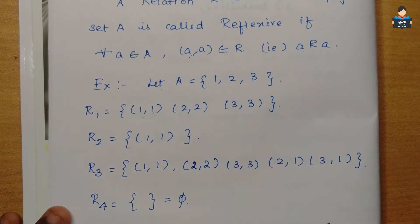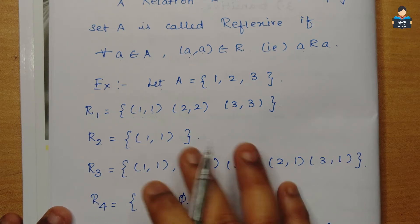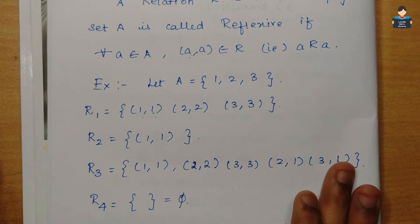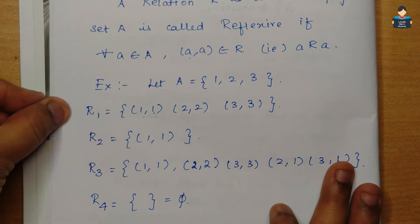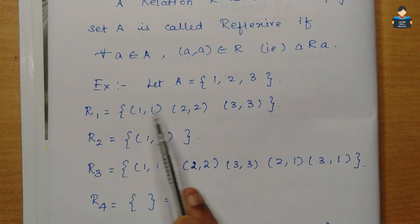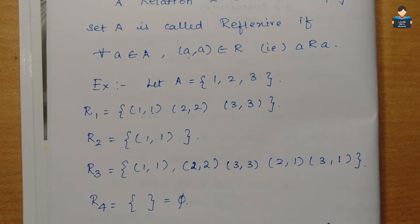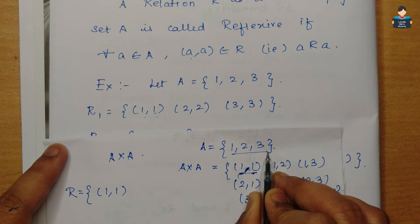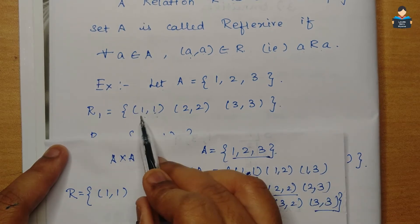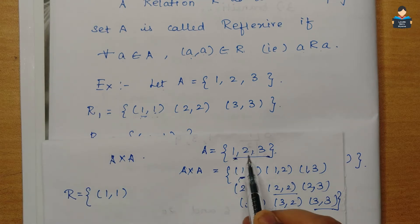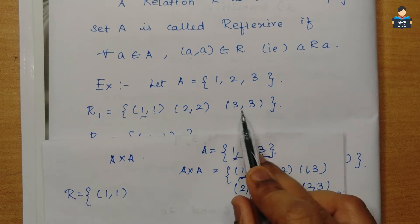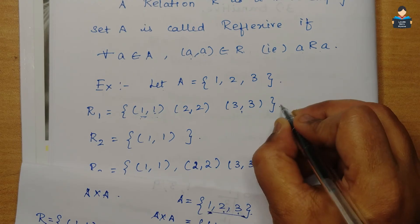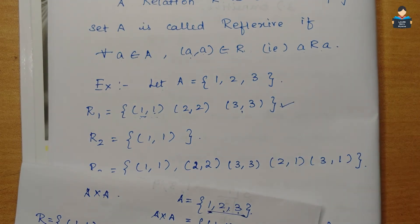For example, consider the relation R1 containing elements like (1,1), (1,2), (2,3), etc. For all elements of set A, each element a has the pair (a,a) present: 1 has (1,1), 2 has (2,2), 3 has (3,3). So this relation R1 is reflexive.